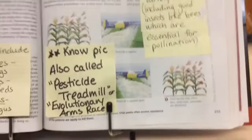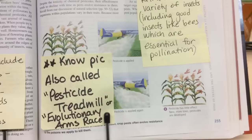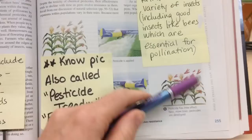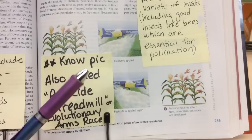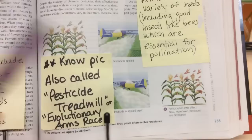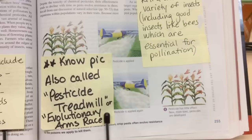The pesticide treadmill works like this: you spray a crop and kill almost all the bugs, but not all of them. The surviving bugs with resistant DNA mate, and the next generation inherits that resistance. When you spray again with the same pesticide, they don't die, so you have to use a stronger pesticide — and then those bugs get stronger too. This cycle is called the pesticide treadmill, and it's an example of an evolutionary arms race.